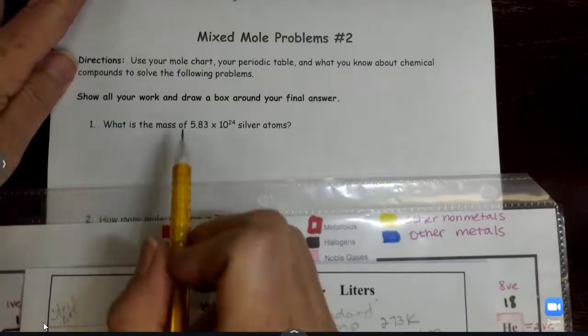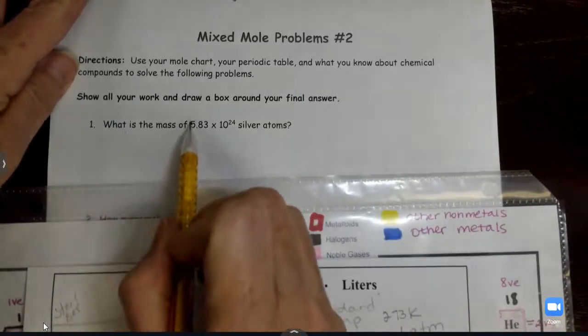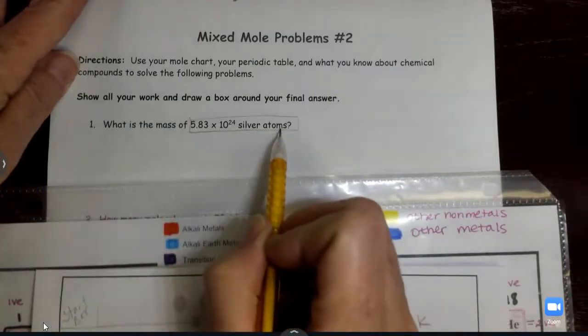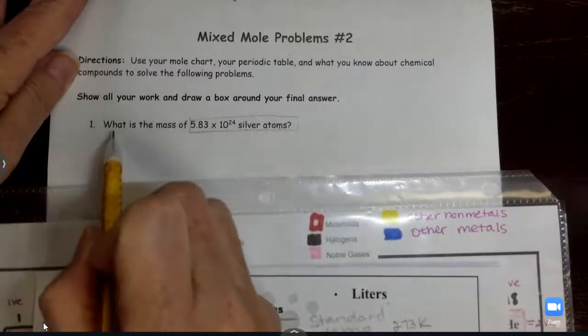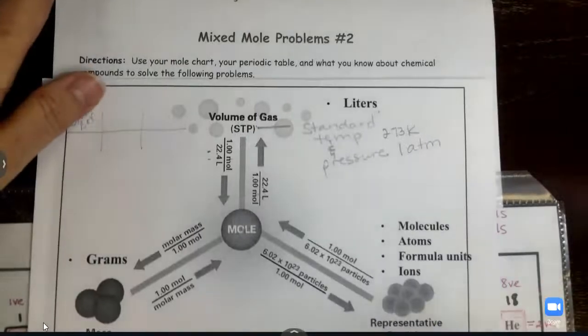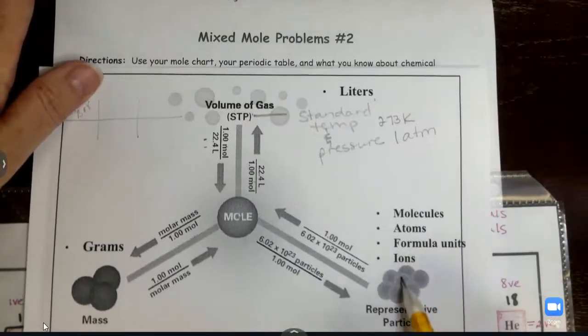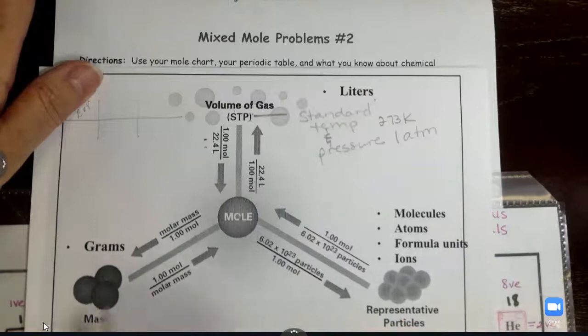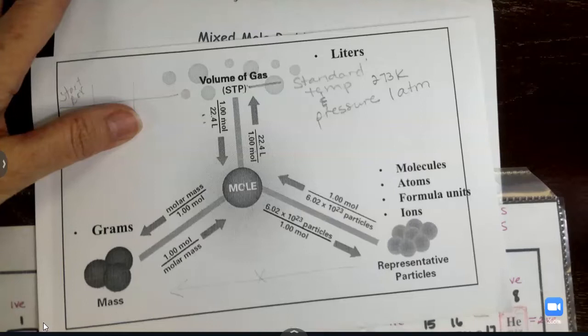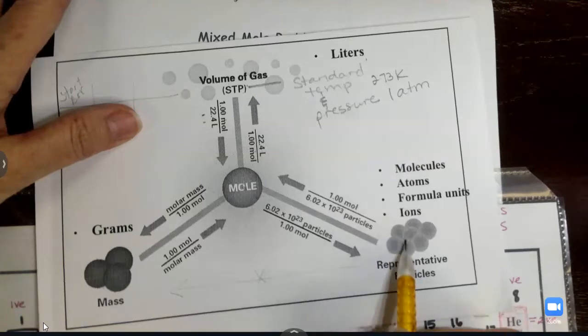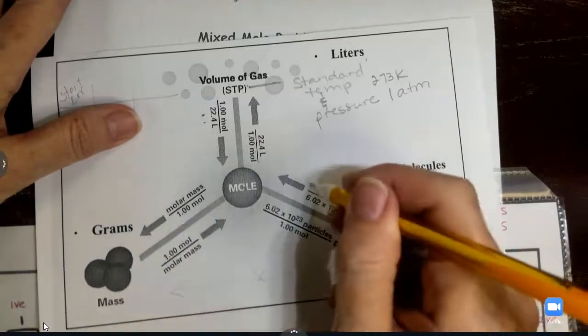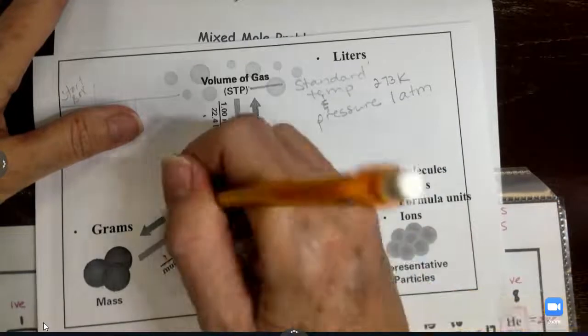So let's look. What do I know? What is the mass of 5.83 times 10 to the 24 silver atoms? So I know atoms, and what do I want to know? The mass. I know atoms, I want mass. So atoms are located here, they are particles, and I want to know mass. Notice I can't go straight there. So what do I have to do? I'm going to have to go first from atoms to moles, and then moles to mass. So it takes two trains to get there.